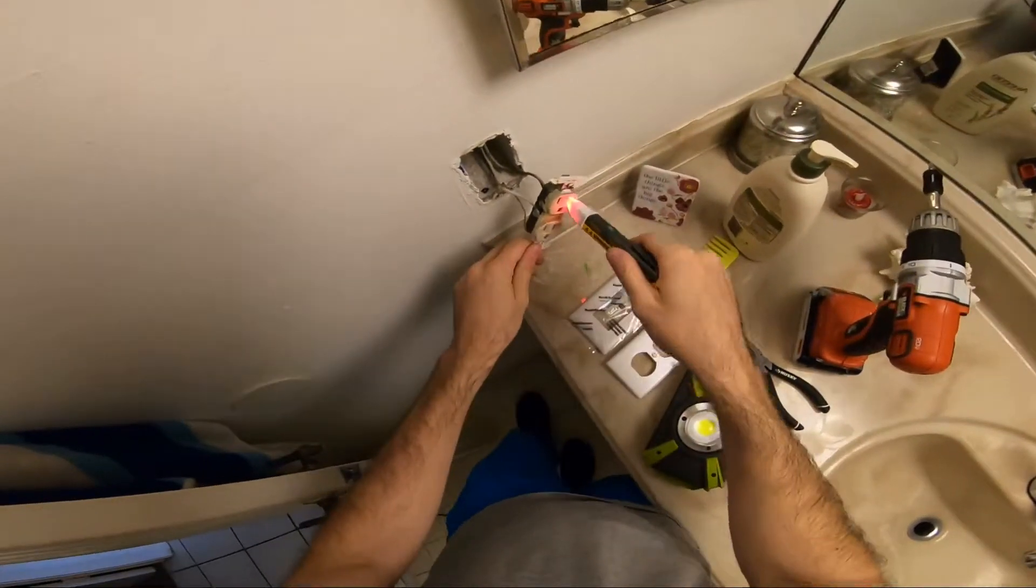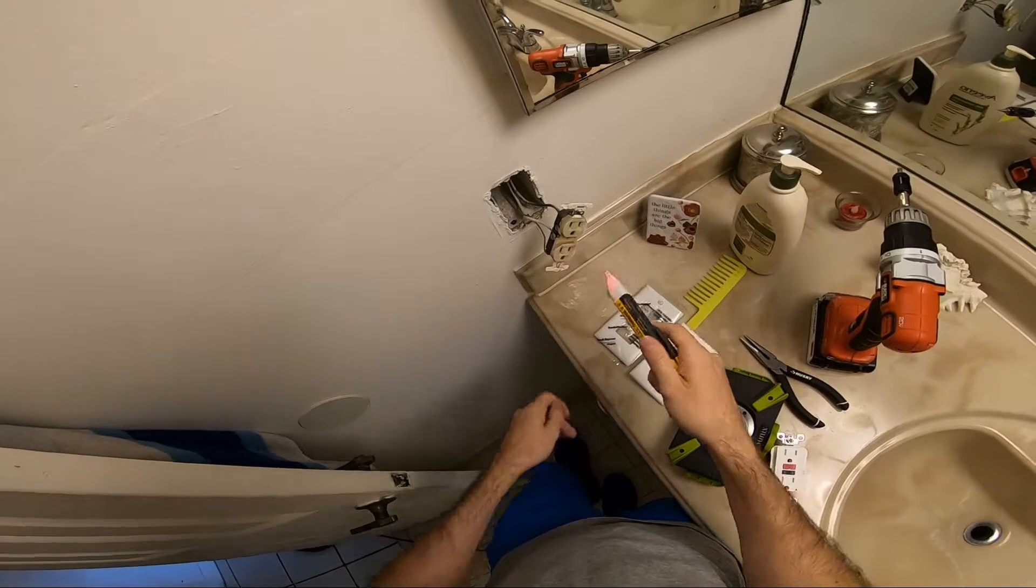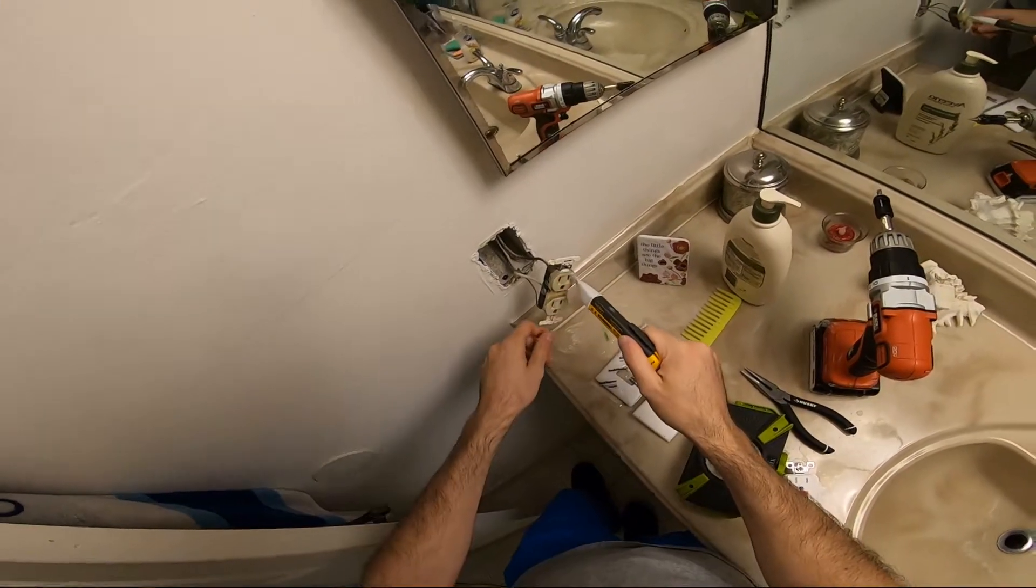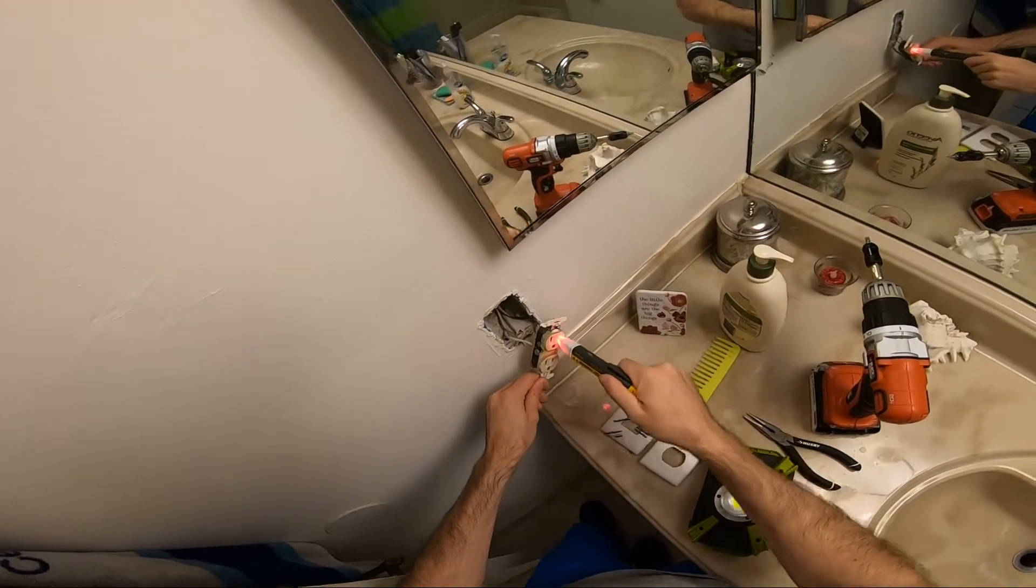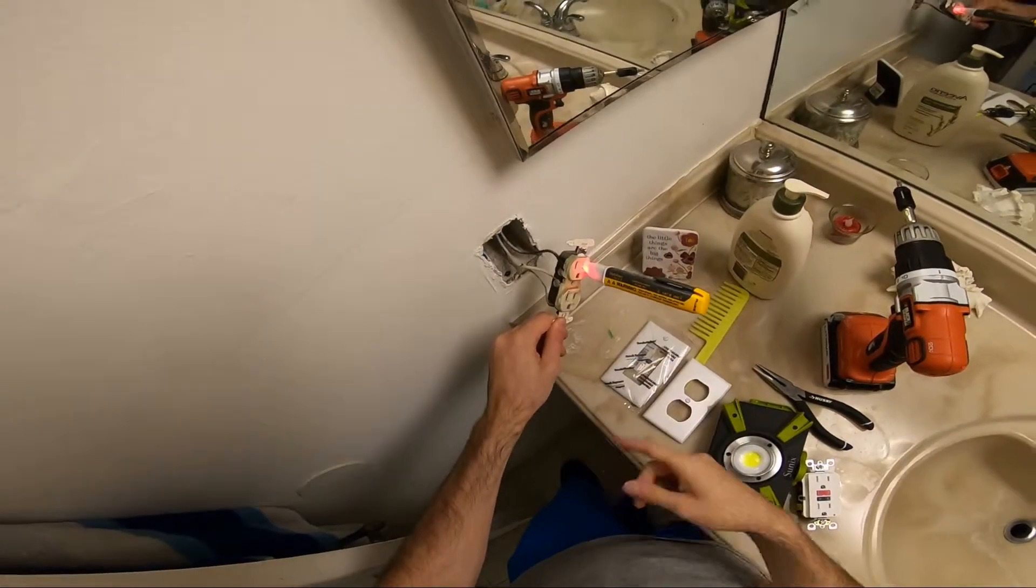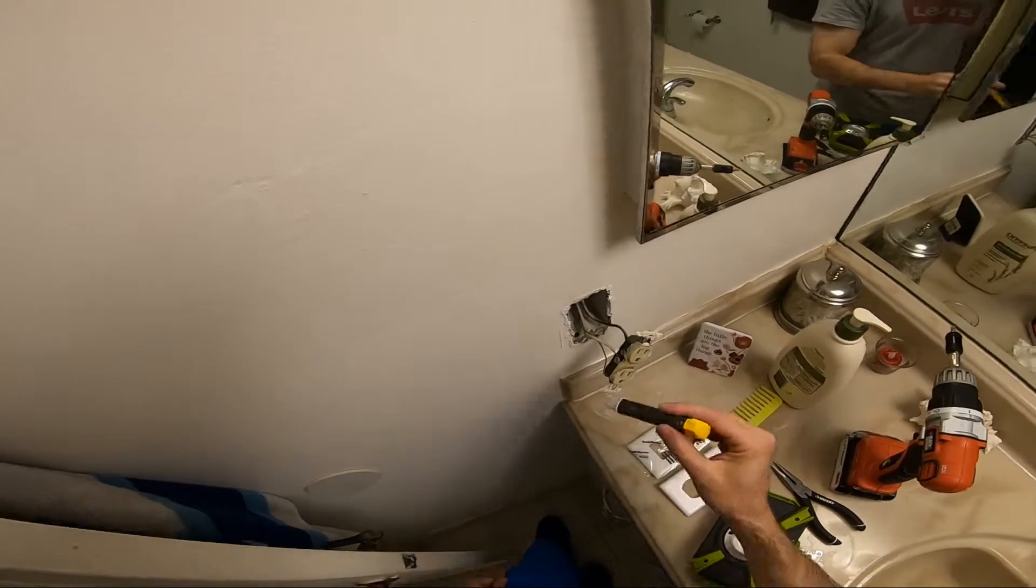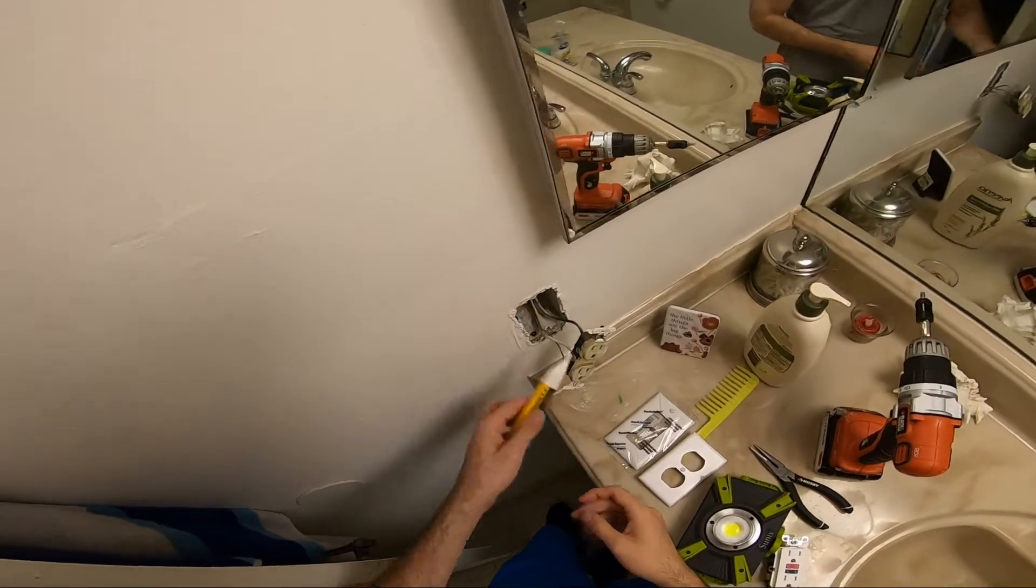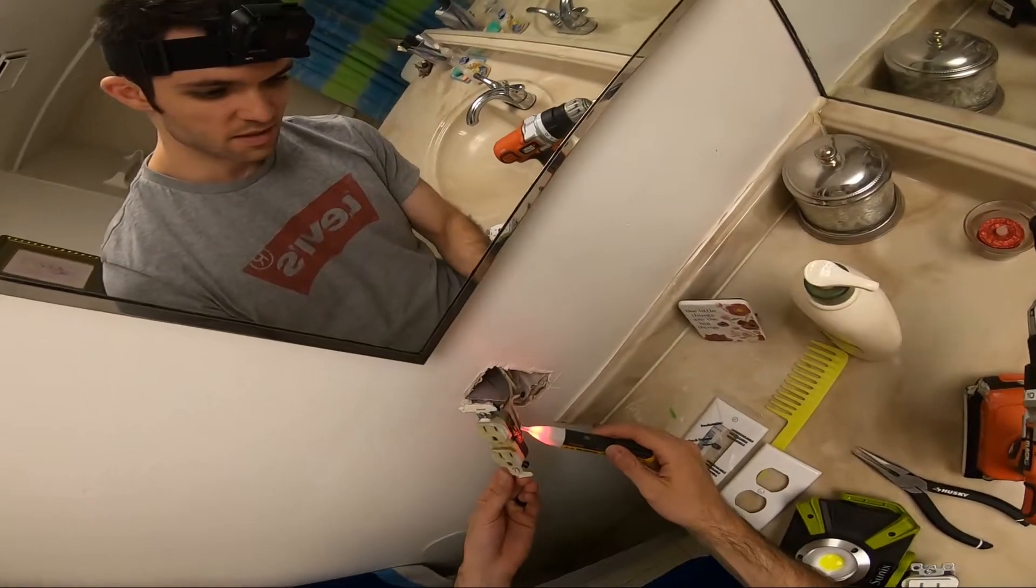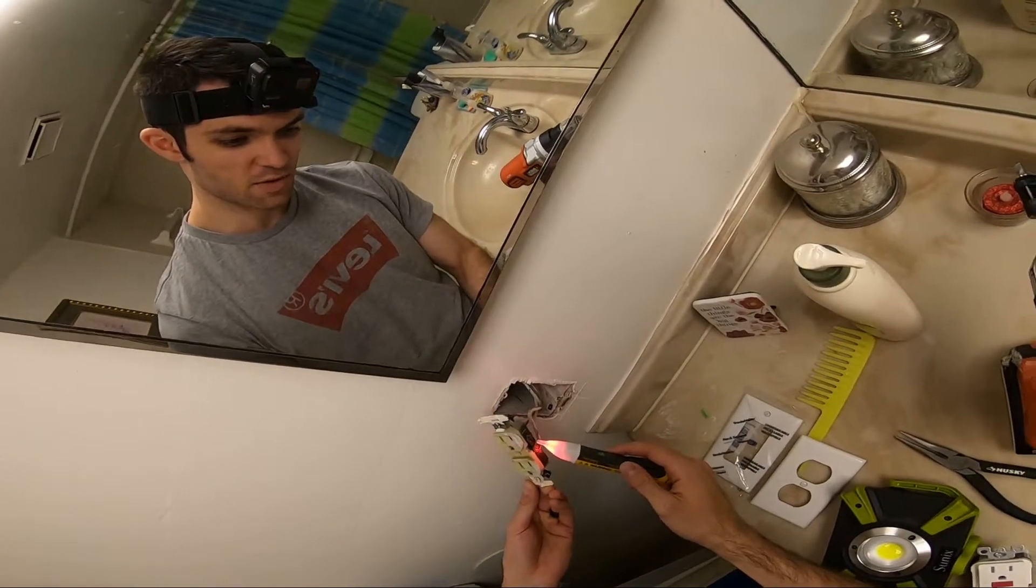Alright, so I went ahead and turned the power back on at the fuse box. So basically what's going to happen is when you stick this in the outlet, in the positive receptacle of the outlet, this thing's going to go off. And basically that's going to tell you that this is hot. You should not touch this. That means there's electricity going to it. Typically it's the black wire. That means that the power is running to it.